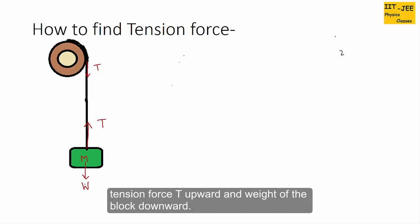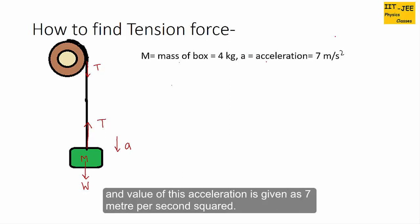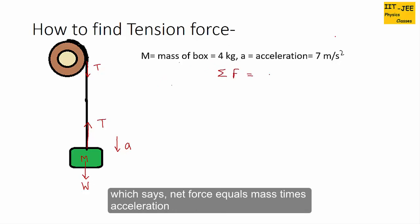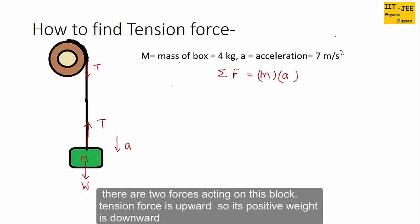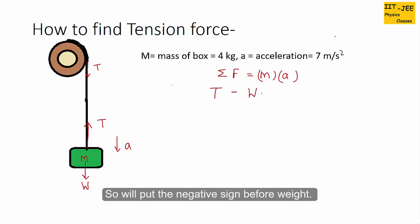Tension force T upward and weight of the block downward. Suppose this block moves down with acceleration A, and the value of this acceleration is given as 7 meters per second squared. Mass of the box is 4 kg. We will use Newton's second law, which says net force equals mass times acceleration. Tension force is upward so it's positive. Weight is downward so we put a negative sign for the weight.